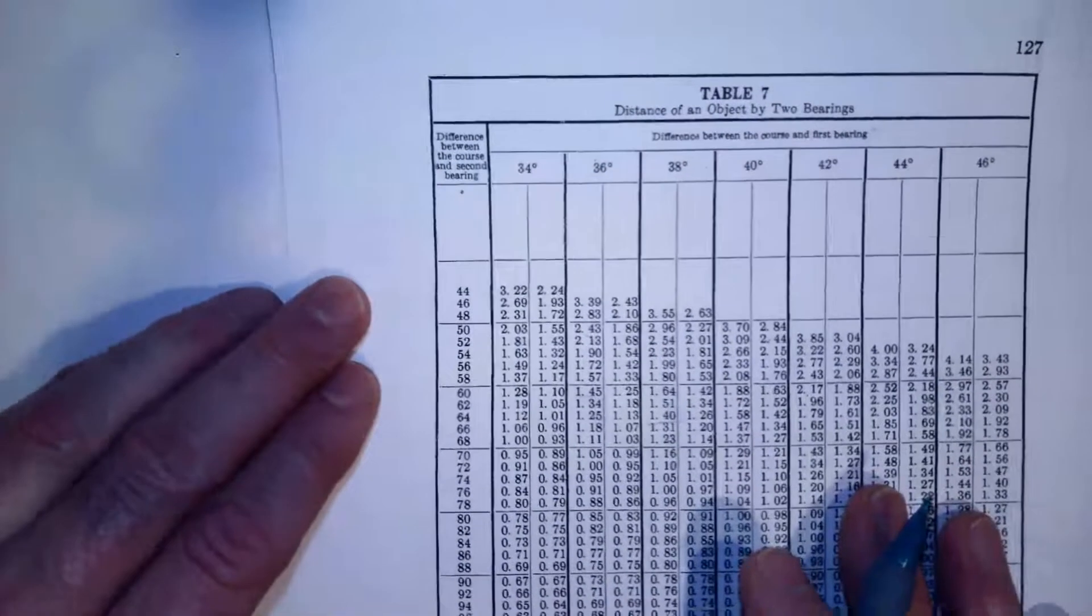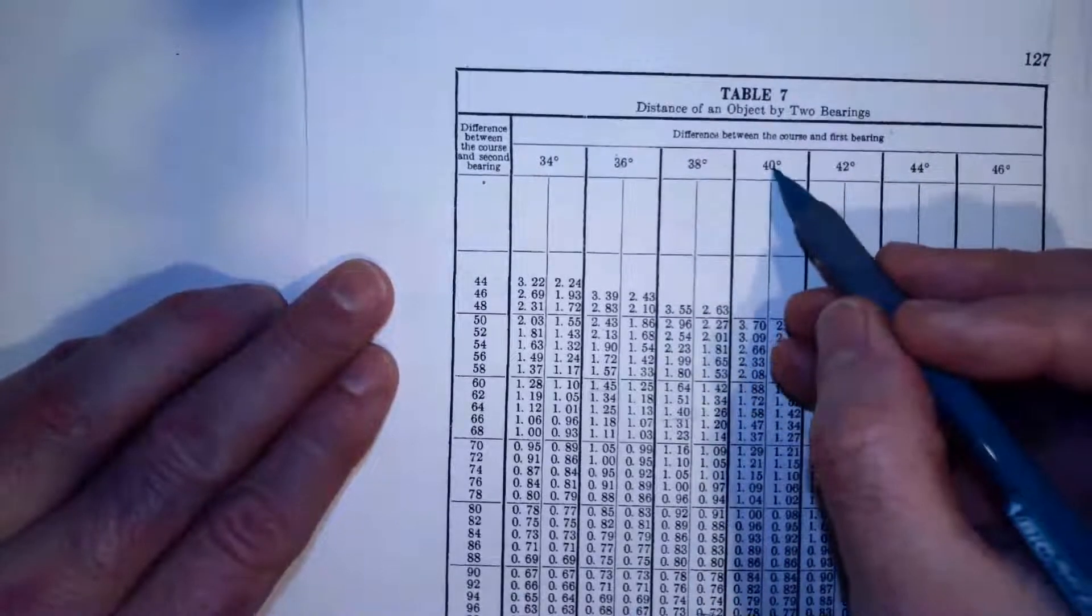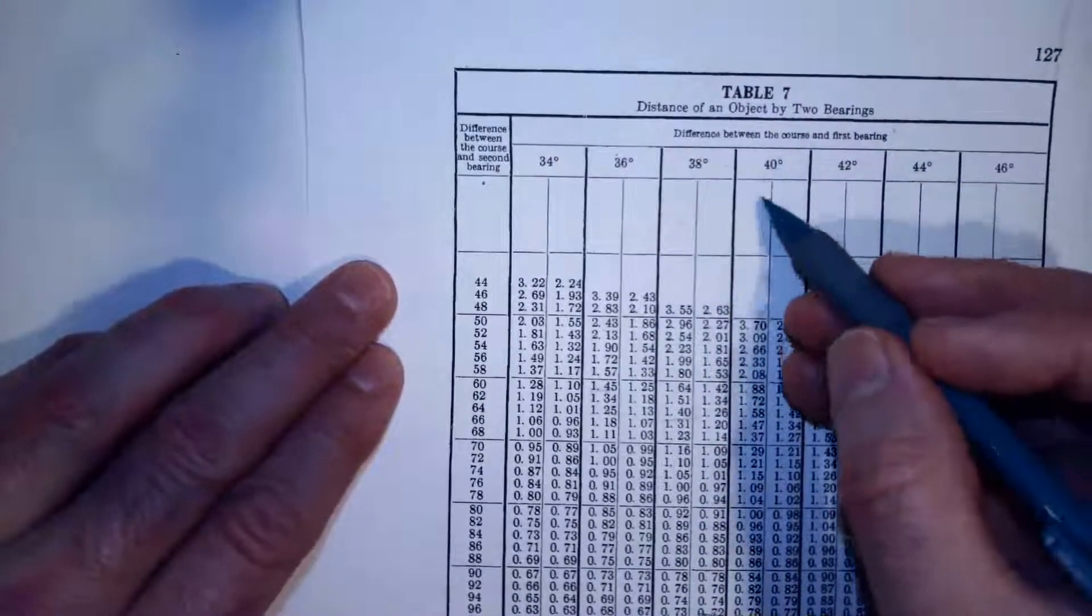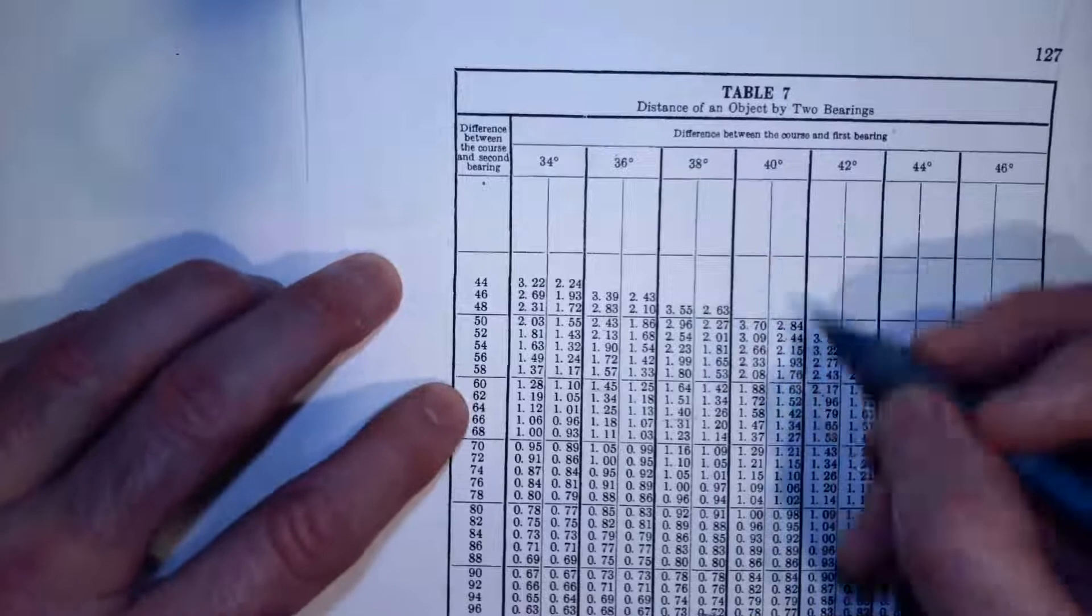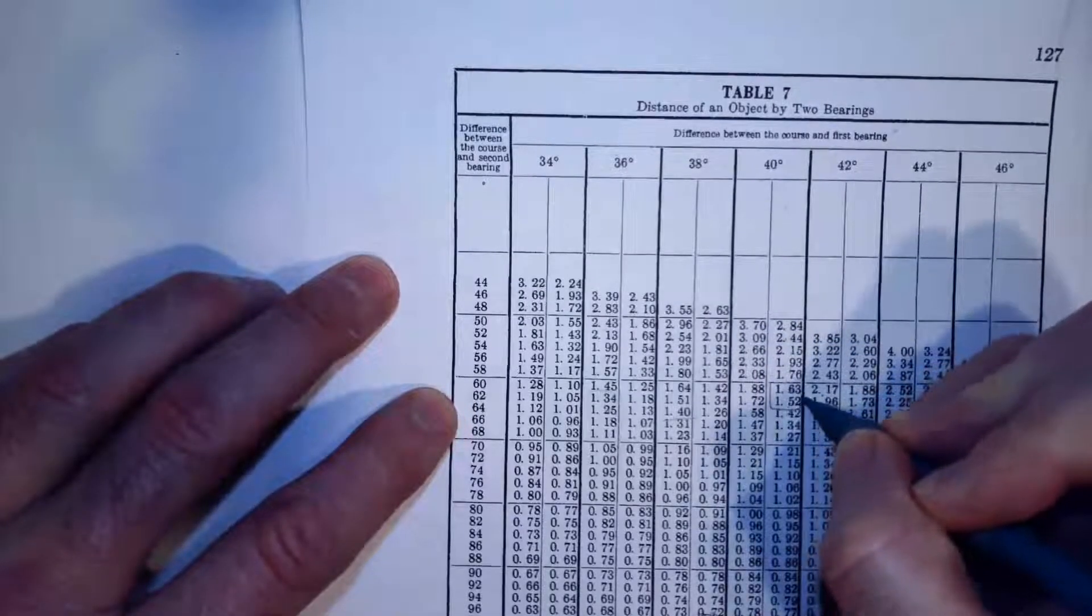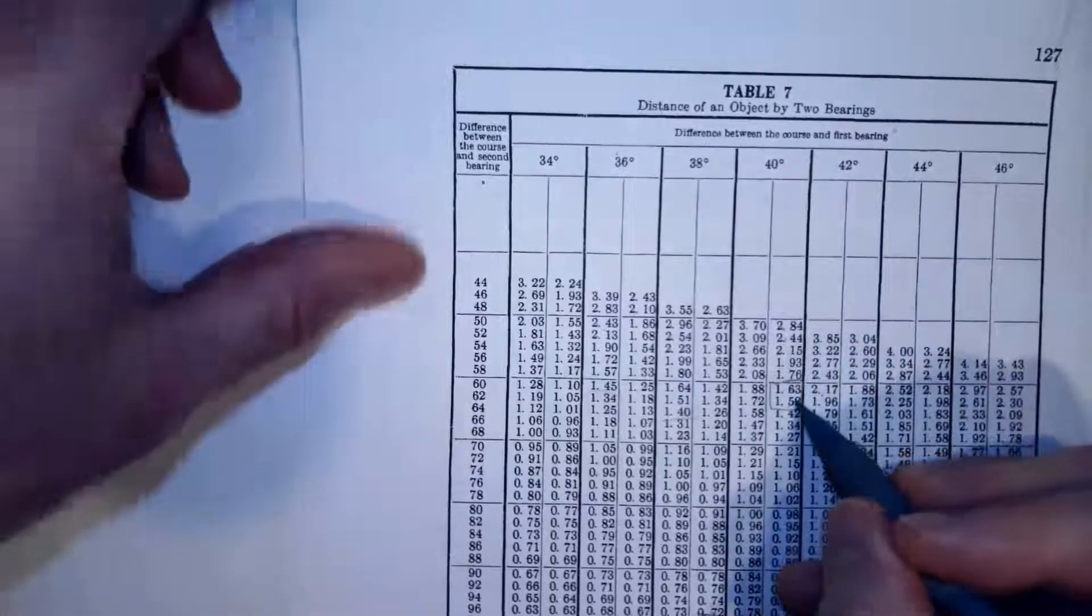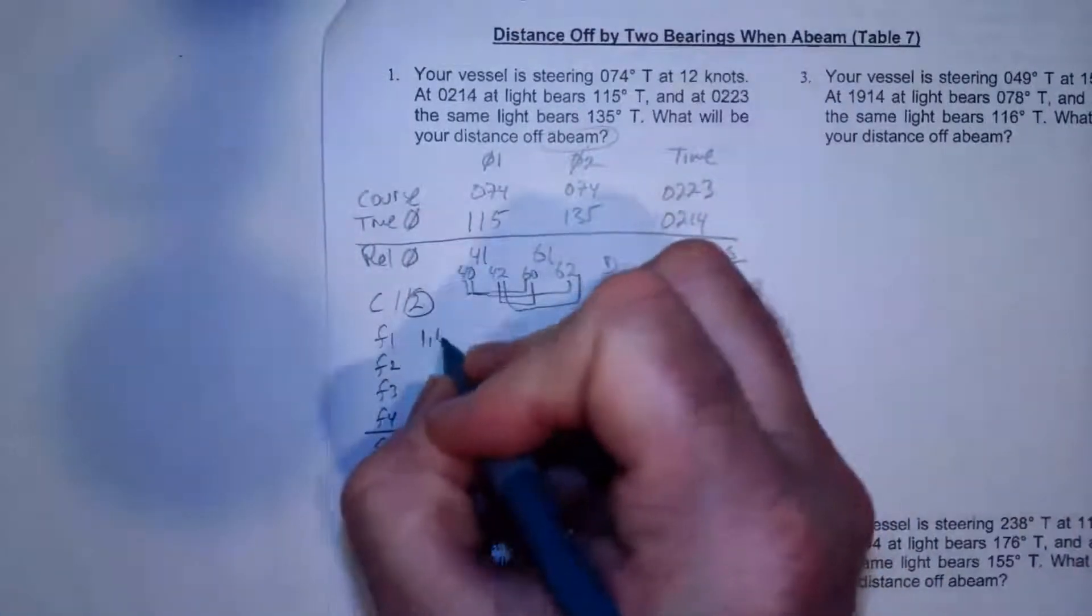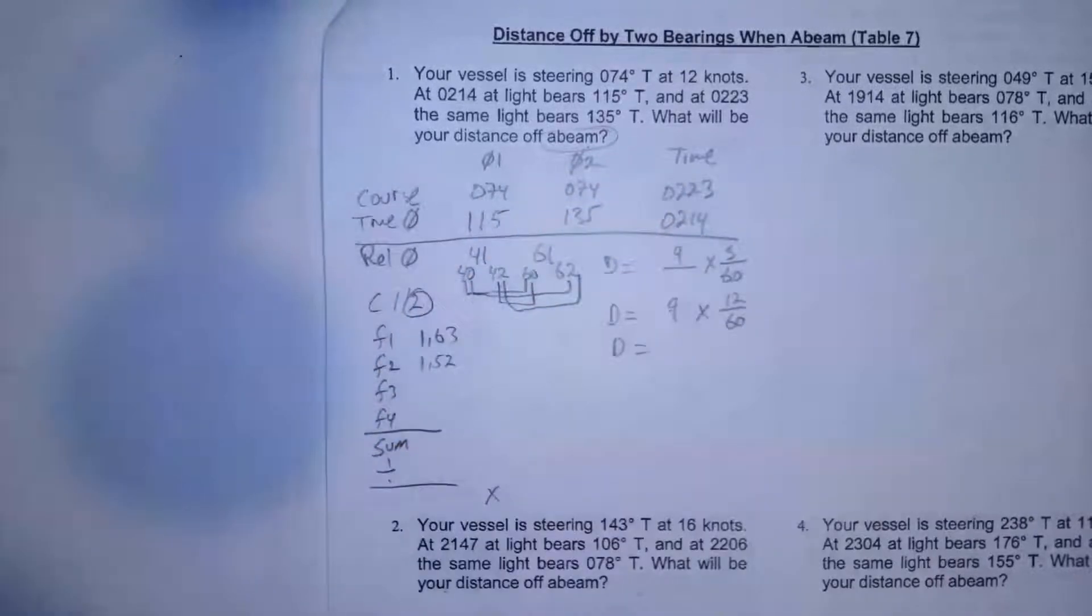And I'm going to use the second column and I'm going to go 40, 60 and 40, 62. So here's 40. I got to go second column and I'm going to go 40, 60, 40, 62. So these are my two factors for 40, 1.63 and 1.52. Let me put those over here. 1.63, 1.52.